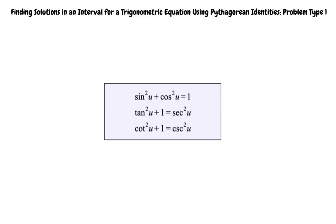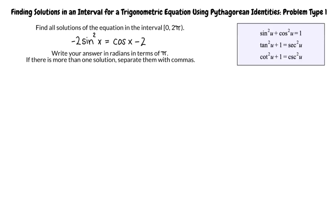Let's start working through an example. Find all solutions of the equation in the interval 0 to 2π. The equation is -2sin²x = cos x - 2.